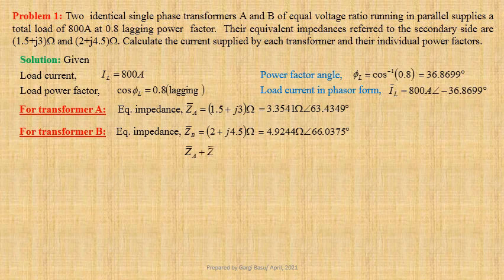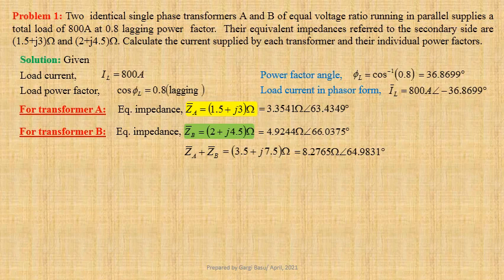Let us now determine ZA plus ZB. Using values we get 3.5 plus J7.5 ohm. This may be written in polar form as 8.2765 ohm at an angle 64.9831 degree.